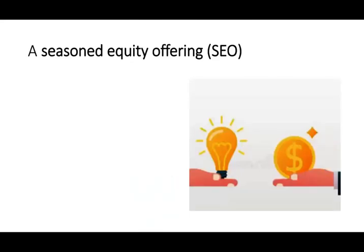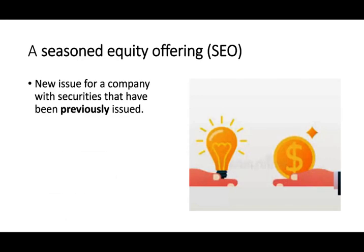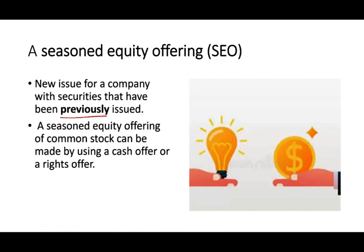A seasoned equity offering, or SEO, is a new issue for a company that has previously issued shares — the company already exists and is now issuing new stocks. A seasoned equity offering on common stock can be made using either a cash offer or a rights offer, because since the company already exists, existing shareholders have the option to buy.